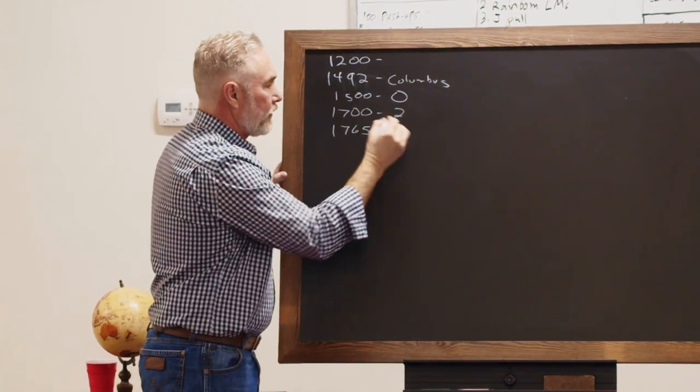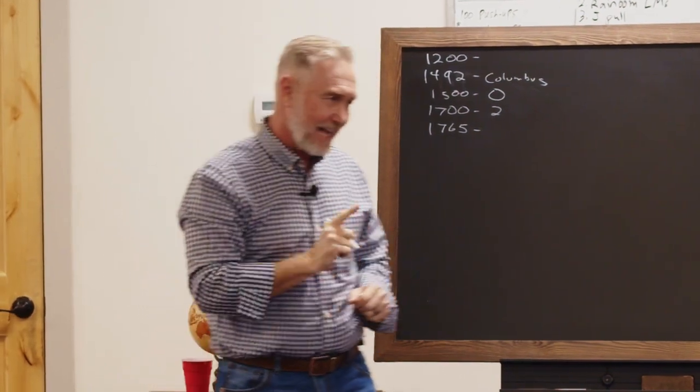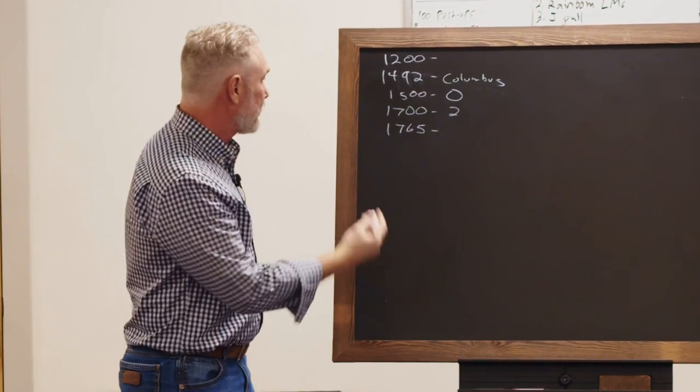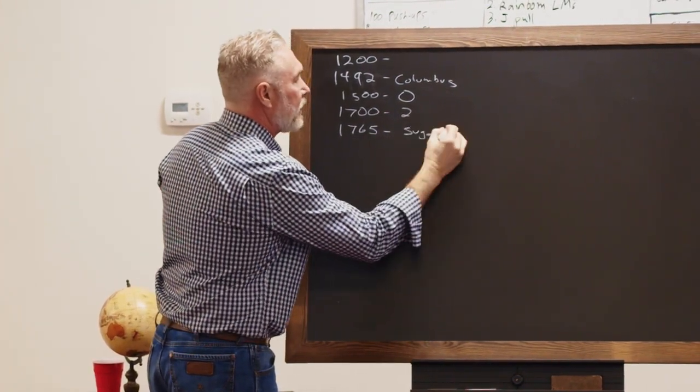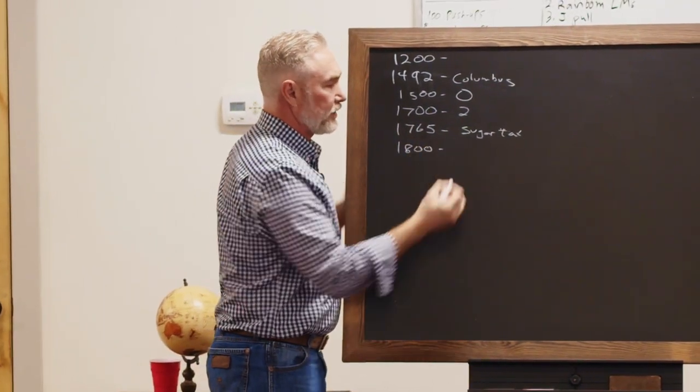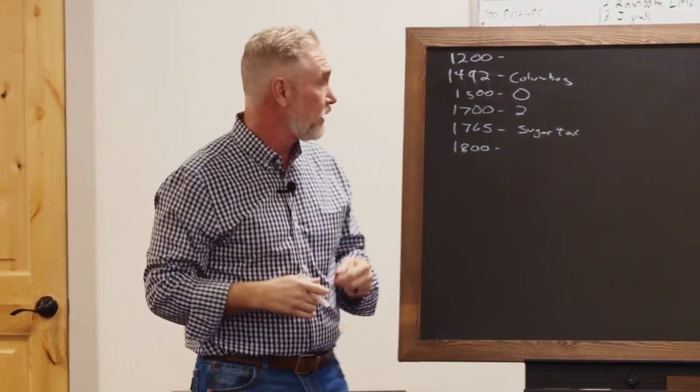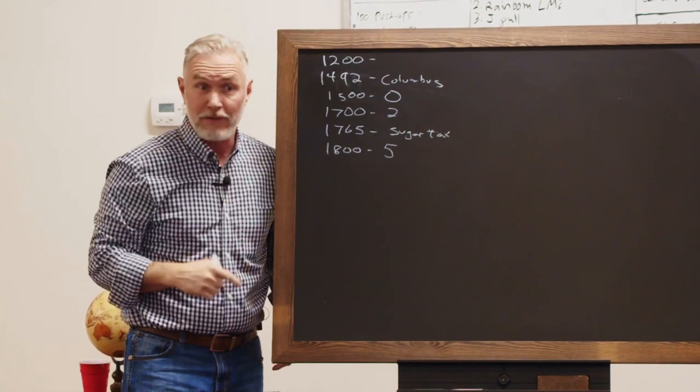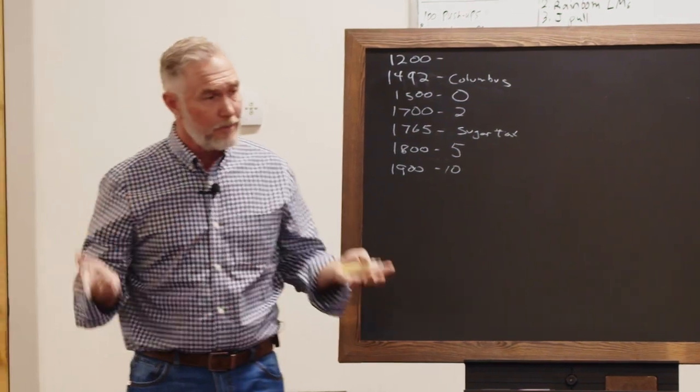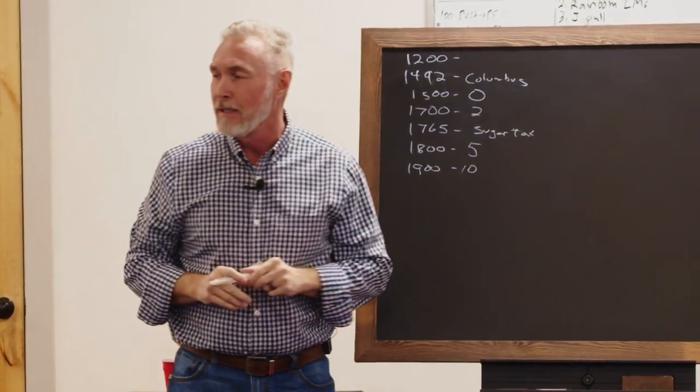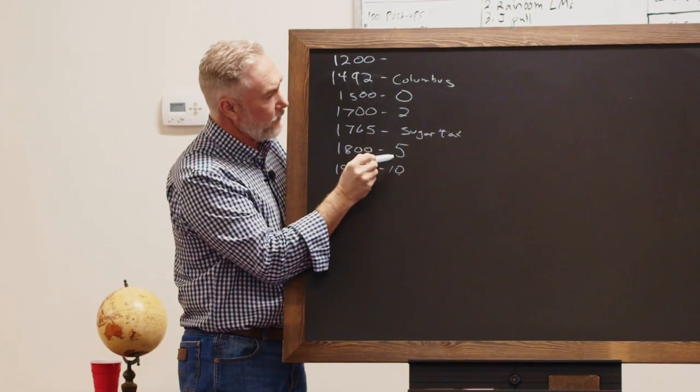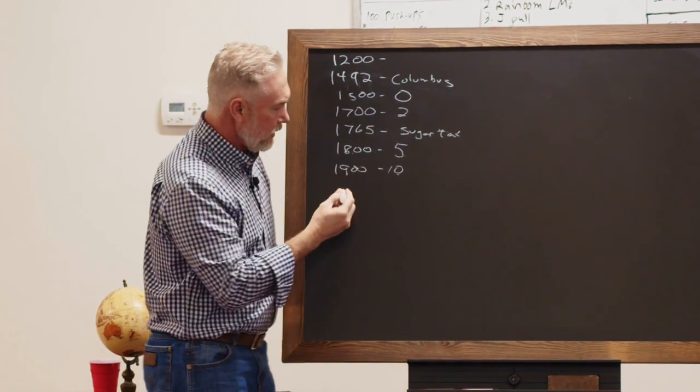By 1500, how much sugar could the average European eat? Zero. There was no sugar except for the kings. By 1700, 200 years later, the average European or American colonist could eat around two pounds of sugar a year, just because they had exploited slavery. There were sugar plantations in places like Haiti and Puerto Rico. In 1765, the British Crown passed the first tax on the American colonists. It was to help pay for the French and Indian War, and that tax was on sugar. Just over ten years later, we had the Revolutionary War, so we may have sugar to thank for the United States of America in part.